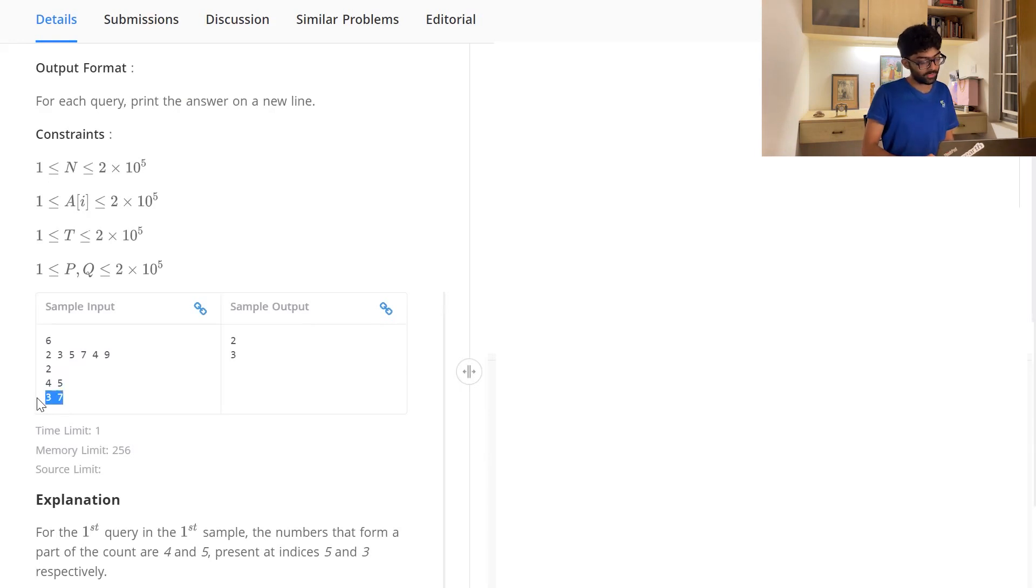Similarly, we can have a look at the next query, 3, 7. How many numbers are divisible by 3? 3 and 9. The numbers divisible by 7 are just 7. That's why our output is 2 plus 1. 2 divisible by 3, 1 divisible by 7, that is 3. Have a look, have a gander, try the problem out, and we will get back to it really quick.